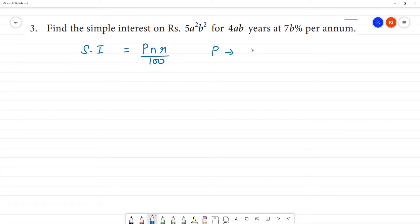P is the principal amount. N is the number of years. R is the rate of interest.